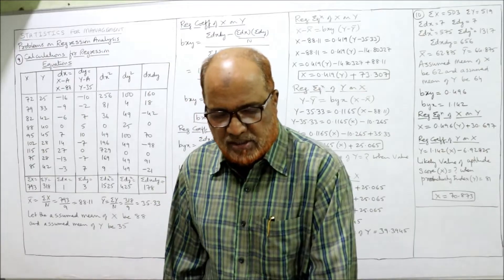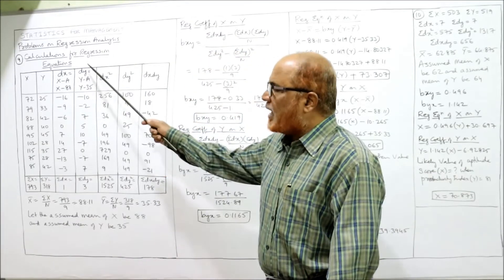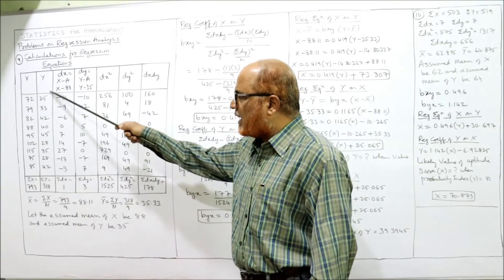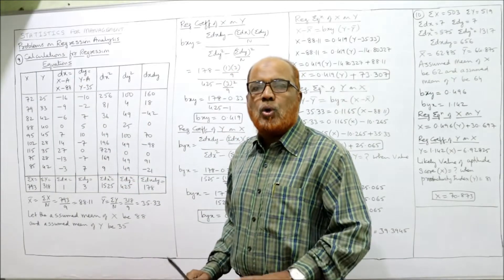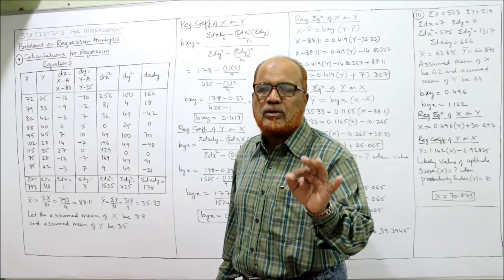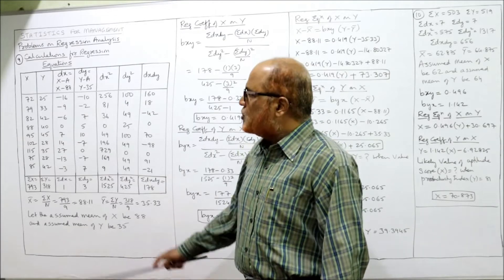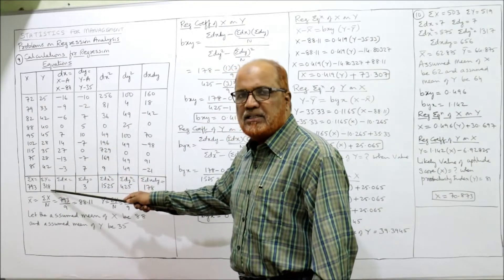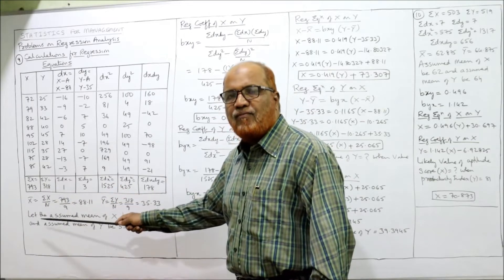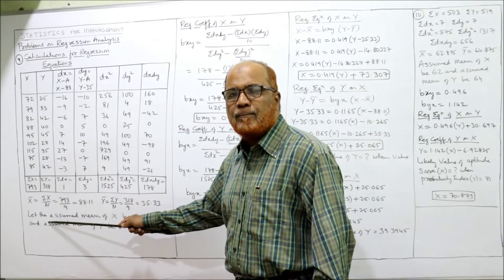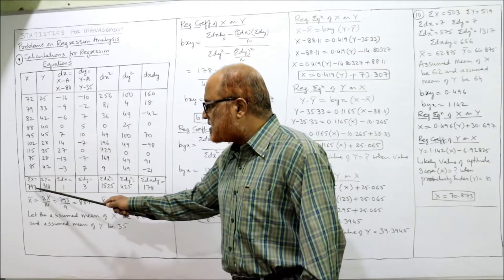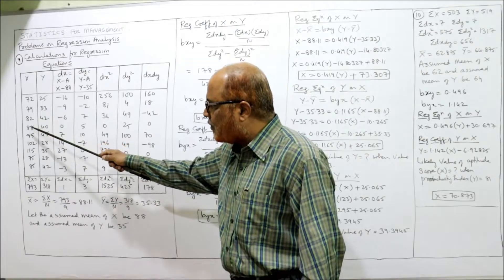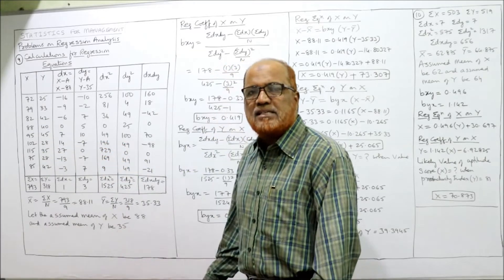But before that, first we'll make the two regression equations: x on y and y on x. As usual, calculations for regression equations — x values and y values are given in the problem. Don't make the other columns first; find out the actual mean. Total of x is 793 and total of y is 318. Find out the mean: x̄ = Σx/n = 793 divided by 9, since n equals 9.